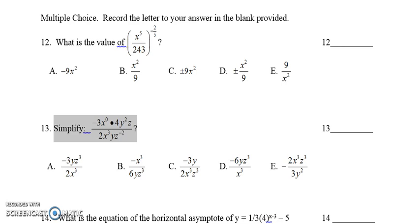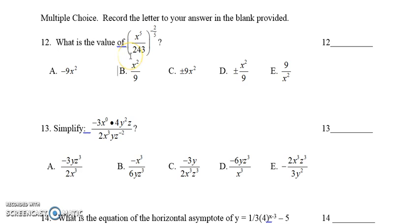We are going to take a look at these multiple choice questions right now. Let's take a look at number 12 first. You have to find the value of that expression, which is x to the power of 5 divided by 243, everything to the power of negative 2 fifths.